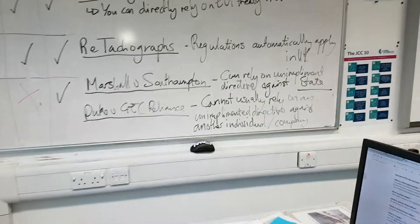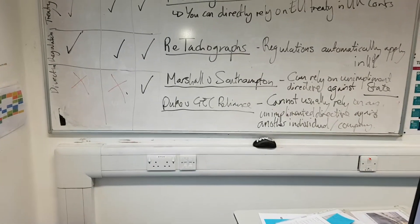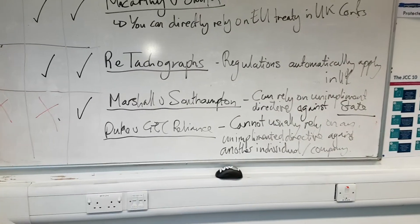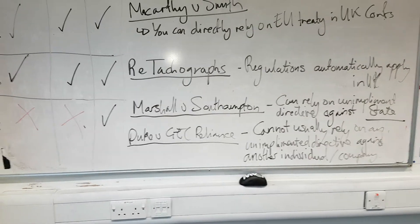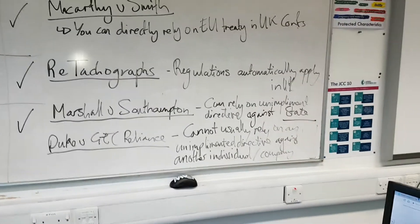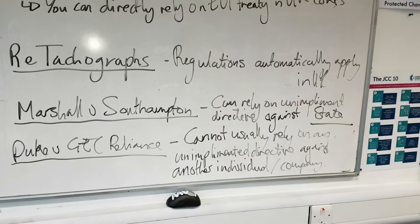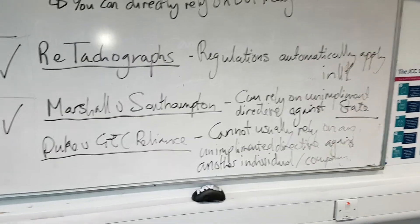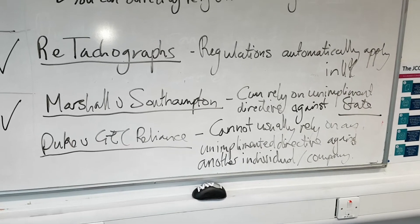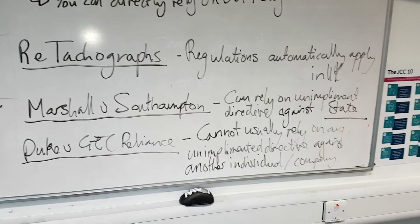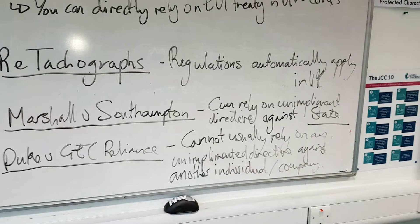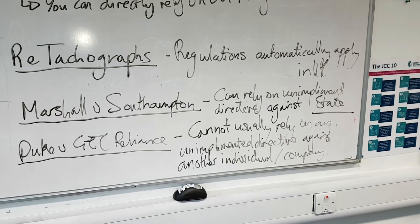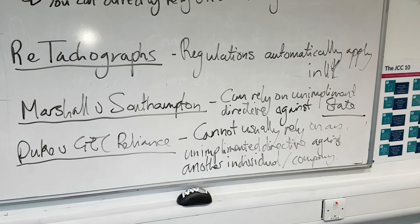Finally, we have directives. Marshall v Southampton demonstrates when you have an individual going against the state — in that case, the claimant could rely on an unimplemented directive against part of the state. Duke v GEC Reliance shows that an individual cannot usually rely on an unimplemented directive against another individual or company.